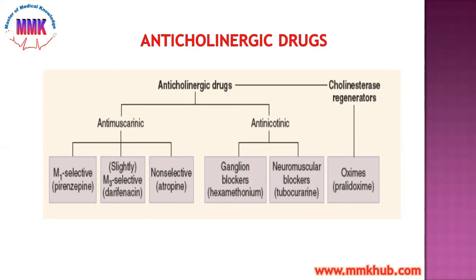First, we study anti-muscarinic drugs. The first subclass is M1 selective. There are 5 types of muscarinic receptors: M1 through M5. The drug that works selectively on M1 is Pirenzepine, which is used in peptic ulcer disease. M1 selective drugs are mostly given for peptic ulcers.